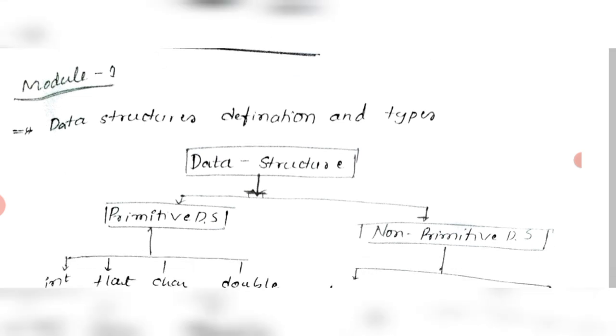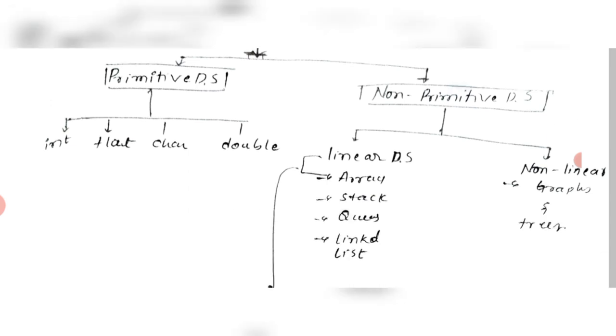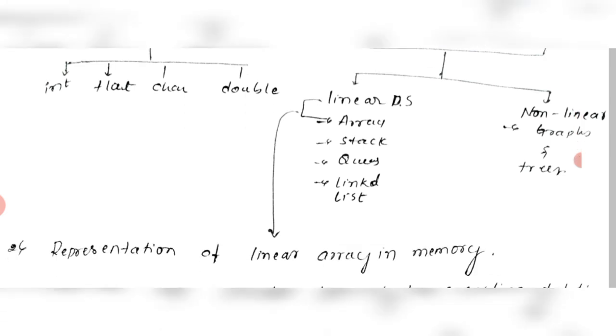The first topic is data structures and its definitions. Data structures have two types: primitive and non-primitive. In primitive you have int, float, char, double. In non-primitive you have further divisions—one is linear and non-linear. In linear you have array, stack, queues, and linked list. In non-linear you have graph and trees.